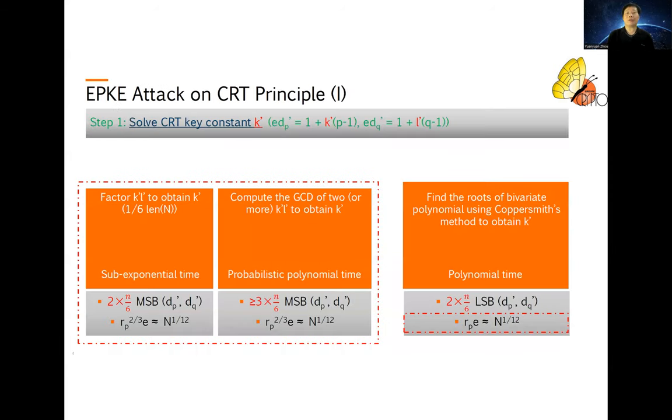The principle of this extended partial key explorer attack is a two-step approach. The first step is we try to find the CRT-RSA constant K'. And for the MSB case, we have two scenarios. The first scenario is we have only one DQ' available, then we just do factoring. We will factor a number at the size of one-sixth of the length of the modulus.